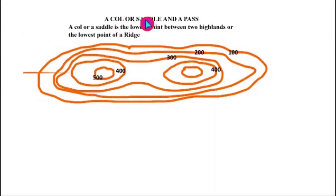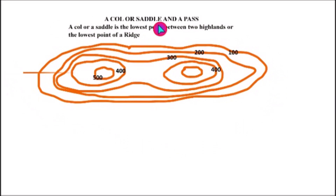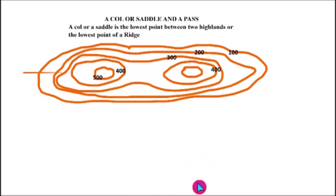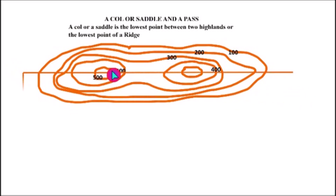Let's look at a col or a saddle. A col or a saddle can also be a path — we will understand the difference as we continue. A col or a saddle is the lowest point between two highlands, or the lowest point of a ridge. When you study this contour carefully, you realize it is a mountain because the calibration goes from the lowest to the highest, and this area is going to be the lowest point.